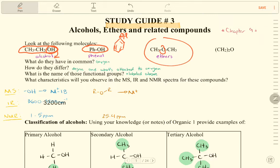What do they have in common? You can see oxygen in all of them. How do they differ? They differ in what is attached to that oxygen. In phenol, oxygen is attached with hydrogen and a benzene ring. In alcohol, oxygen is attached with hydrogen and a carbon chain. In ether, oxygen is attached with two carbons. Those are the functional group labels.